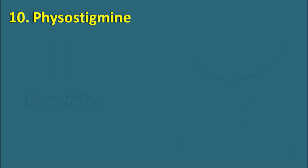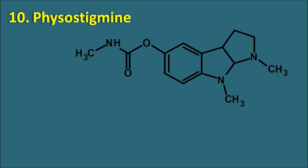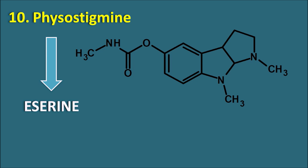The tenth one is physostigmine. Physostigmine is having a ring structure with an indole ring system attached with a pyrrole, also called the pyrroloindole ring system. Physostigmine is a natural product having this pyrroloindole ring system. This drug can also be called as eserine. Eserine has a methyl carbamate moiety responsible for its action on acetylcholinesterase. Physostigmine acts as a medium-acting acetylcholinesterase inhibitor and is used in the treatment of glaucoma by increasing acetylcholine levels within the eye.